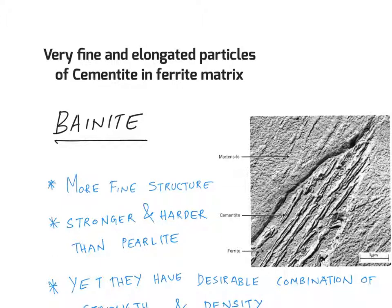Cementite is helping or acting as a reinforcement in the ferrite matrix. The influence is directly proportional to the amount of phase boundary area. So in this case, since phase boundary area is more, the influence or the strength of these particular alloys will be more.